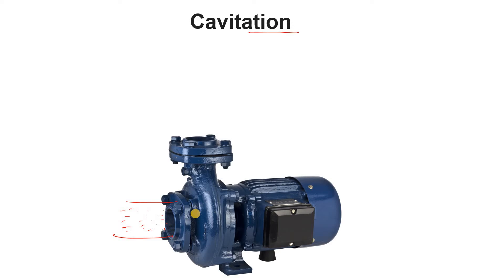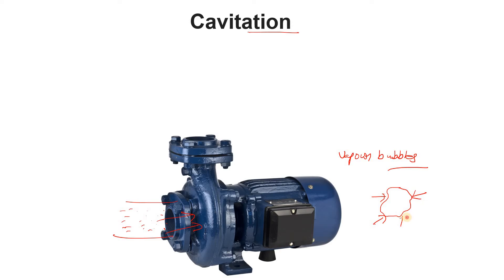When boiling occurs, vapor bubbles form. Those vapor bubbles enter the system through the impeller. In a centrifugal pump, the impeller is the rotating part, and from the casing the pressure increases. When the pressure increases, force is applied on those bubbles and they collapse. The surrounding liquid rushes in to fill that gap, which damages the pump impeller and the casing — that's why cavitation is dangerous for the pump.